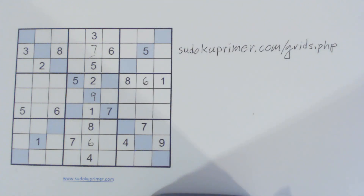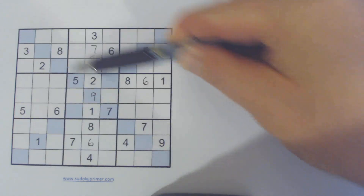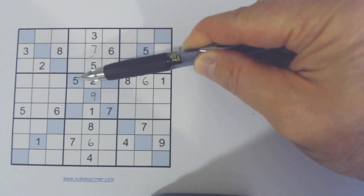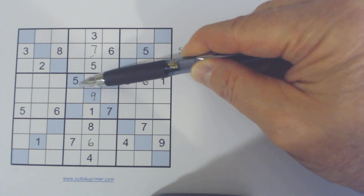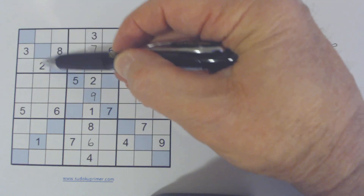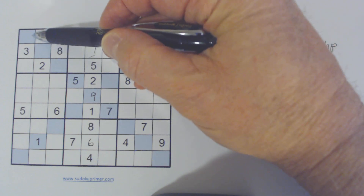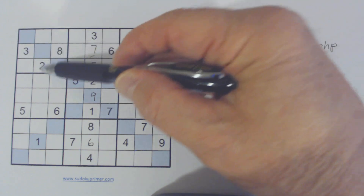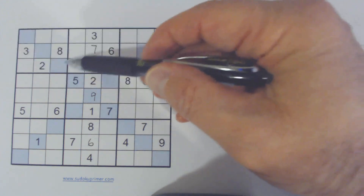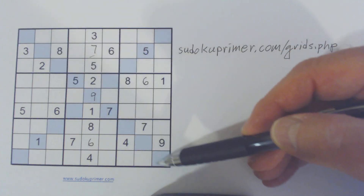Now we've gone through the puzzle as a regular puzzle. Let's look at the diagonals. On this first diagonal, we're missing 1, 2, 3, 4, 6, and 8. Two, three, and eight are already in this box, so 1, 4, and 6 will go in one section, and 2, 3, and 8 will go in another section.